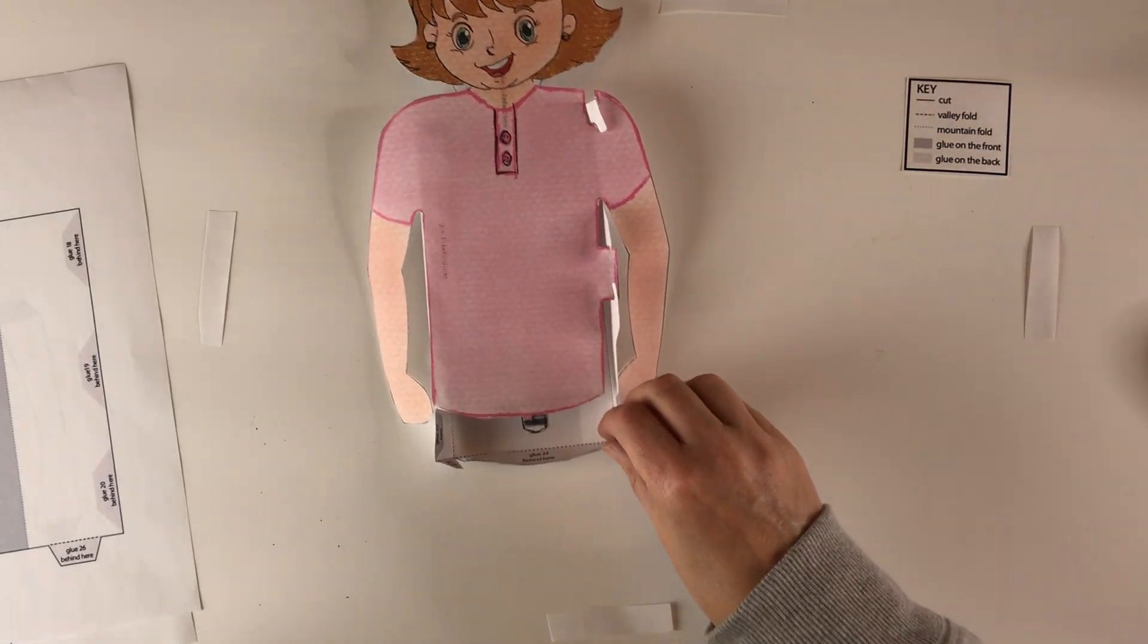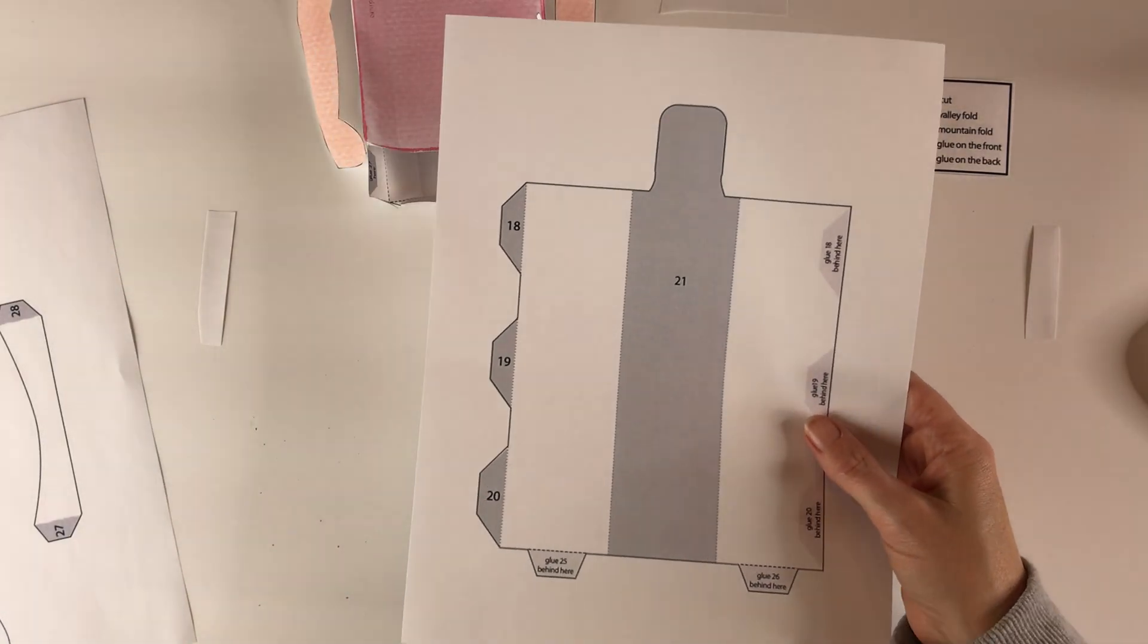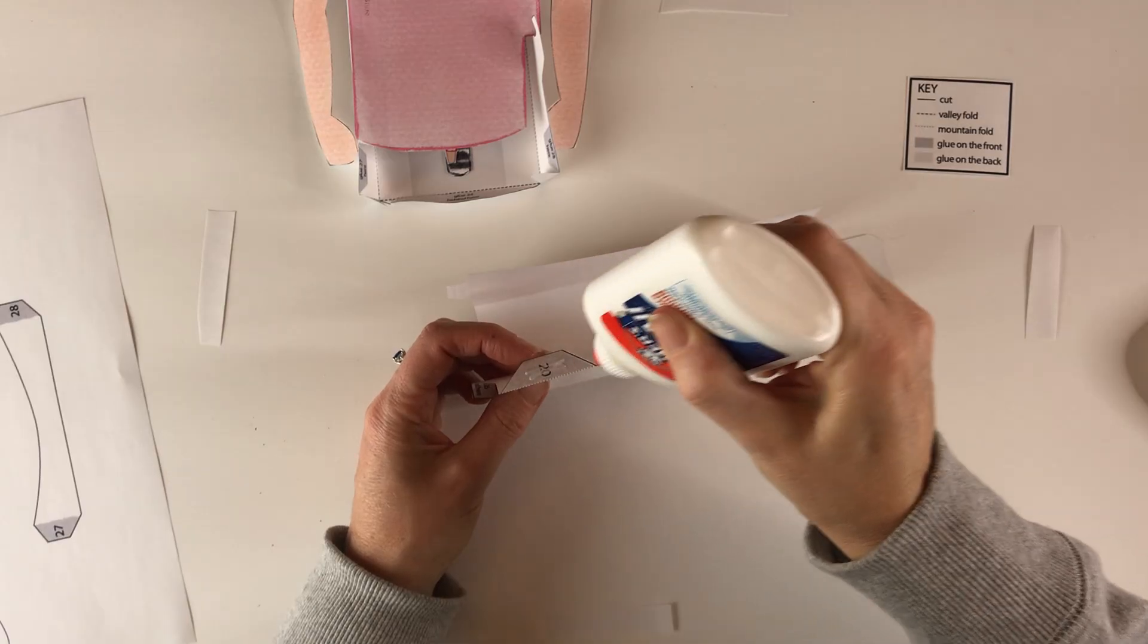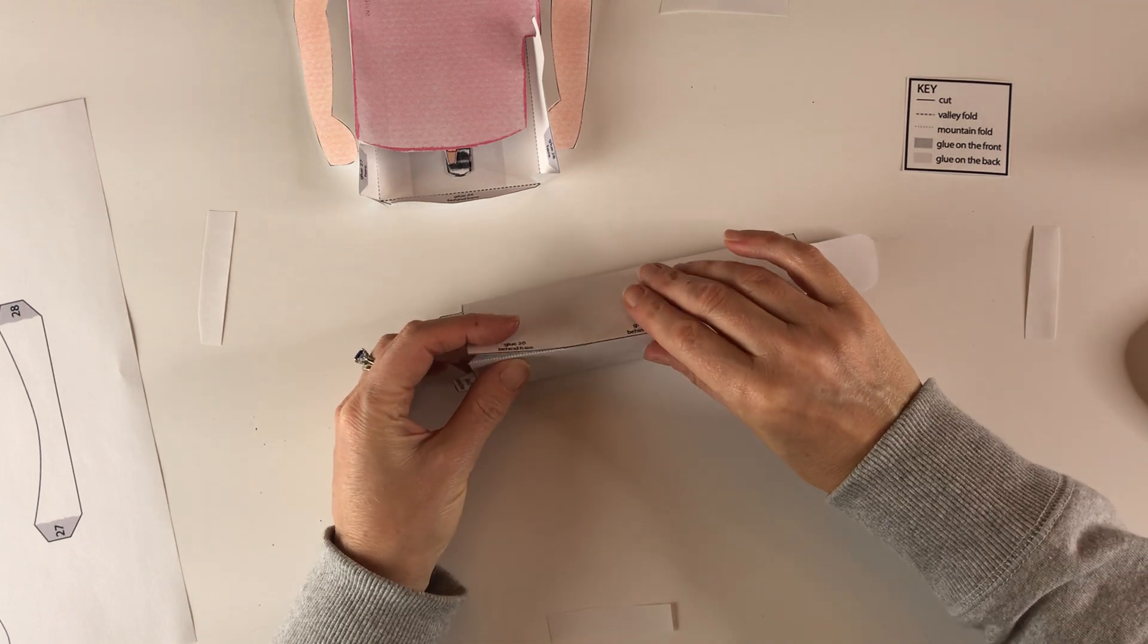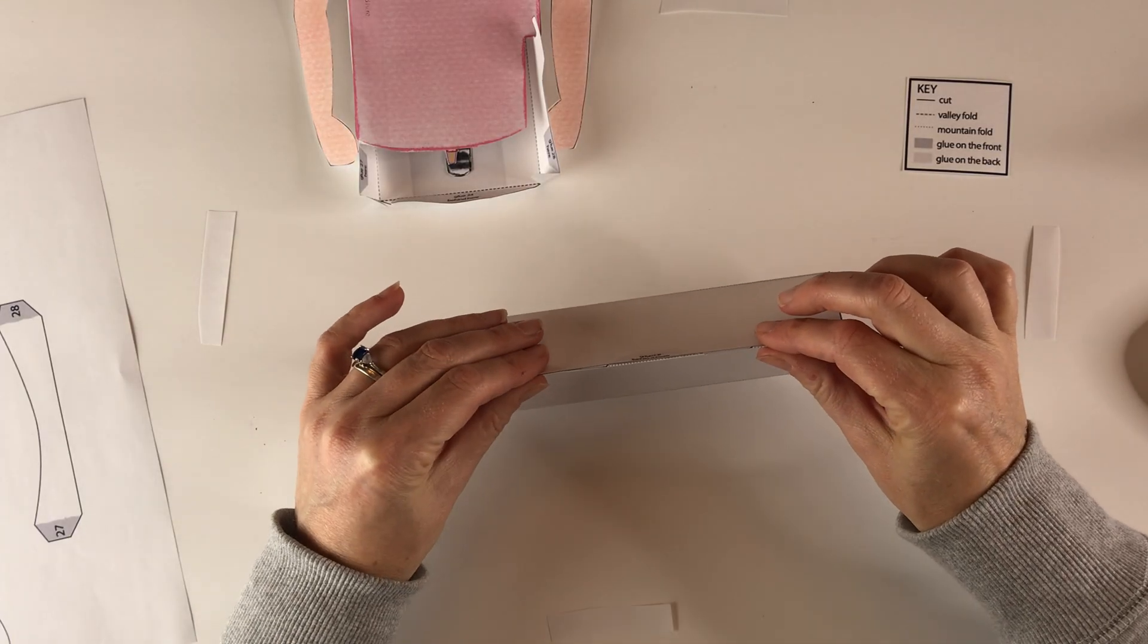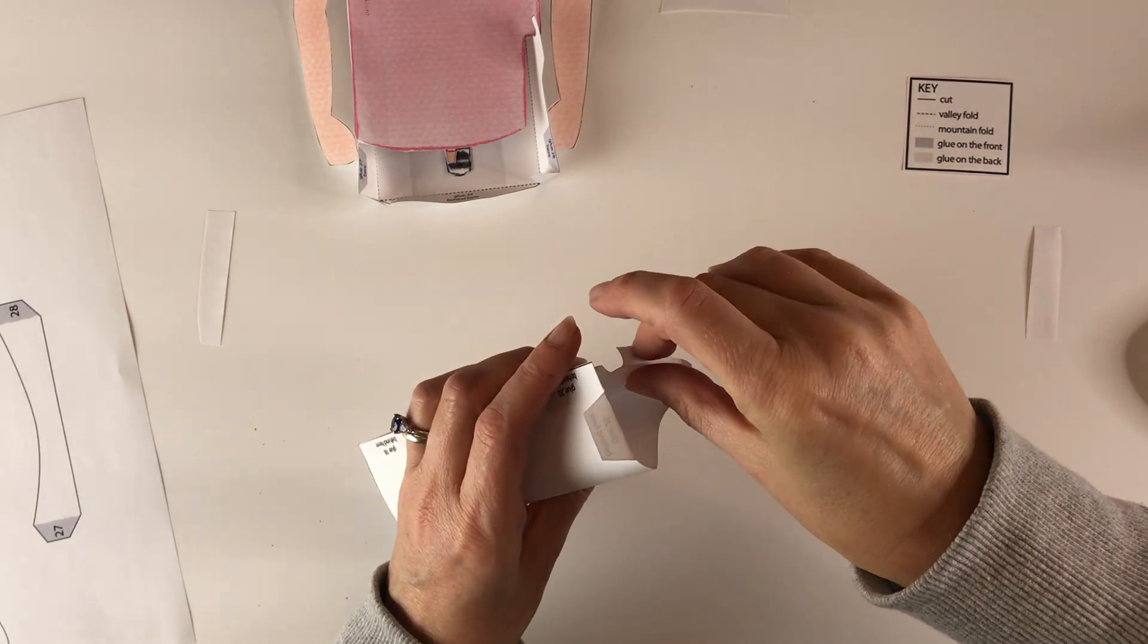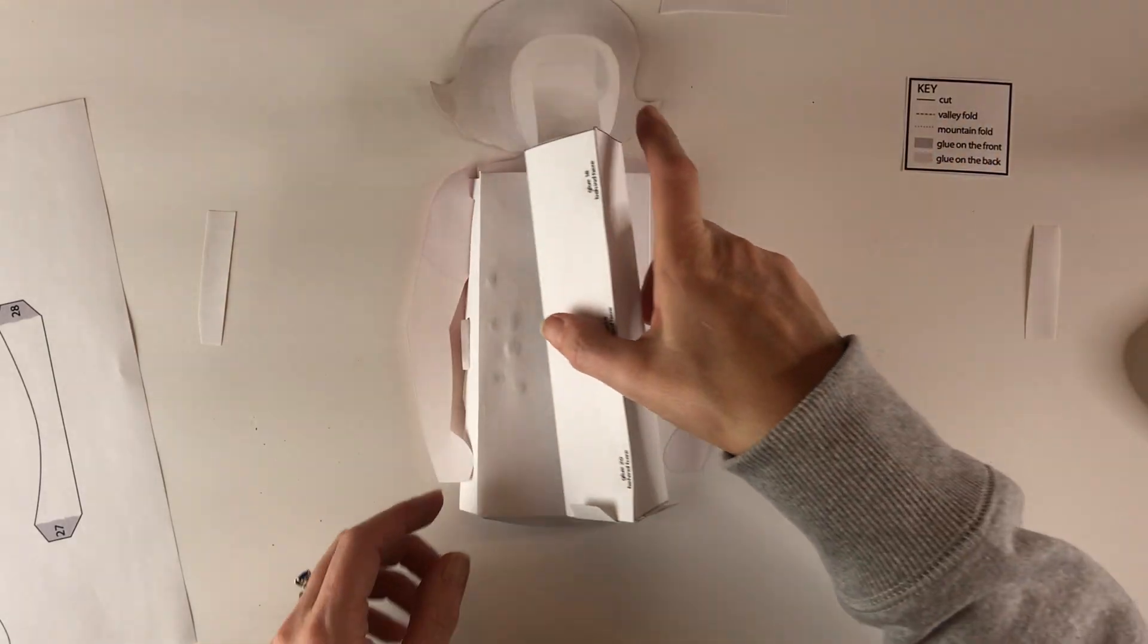Okay, so we're gonna put that aside for a moment. The next is to do the support for the back, that looks like this. I have that already cut out and folded, and so then it says here glue 20 behind here, 19 behind here, 18 behind here. So I'm gonna go ahead and do that. This goes right on here and this is going to support the back when she's sitting up.